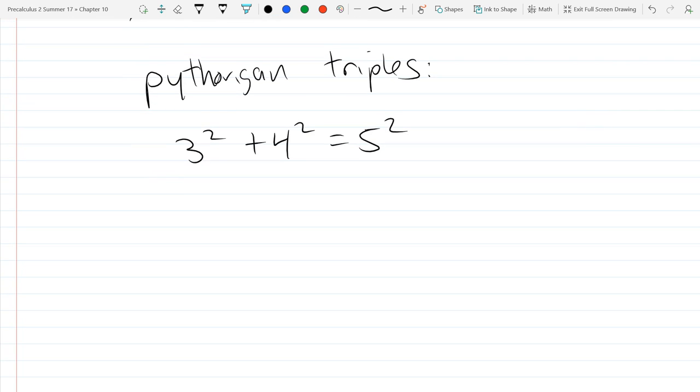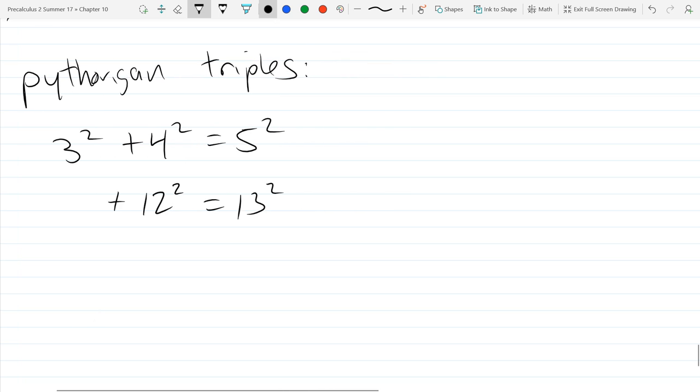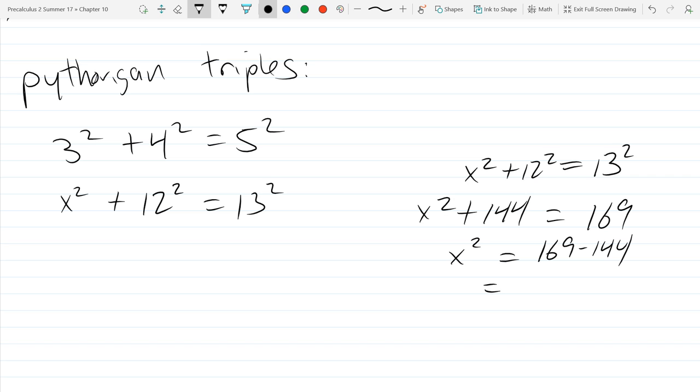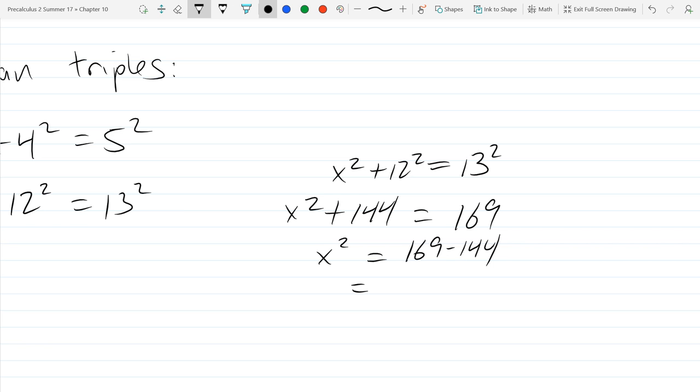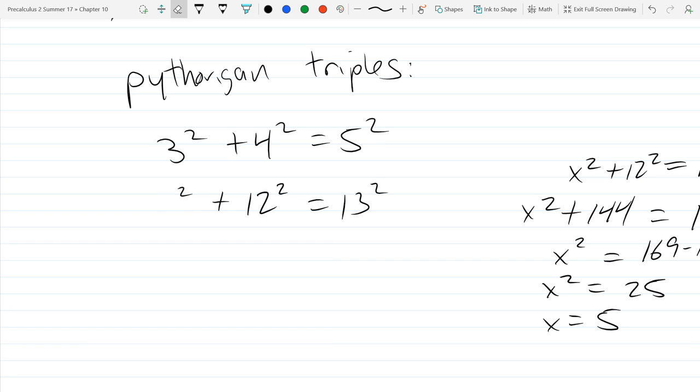There's another nice one that's got a 12 and a 13. When in doubt, I'll just write x² and we'll figure it out, solve for x. x² + 12² = 13². 13² is 169, 12² is 144, so 169 - 144, hopefully that's a nice number. That's 25. So x is 5. We've got 5, 12, 13.